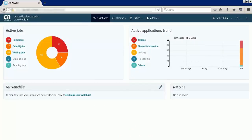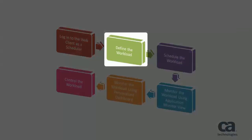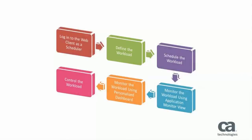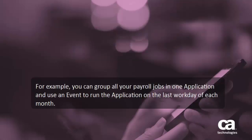The web client is logged in with the dashboard as the landing page. Next, let us see how to define the workload in the defined view. To define the workload, you must define an application and the required jobs within the application. An application is a logical container for jobs that are run by agents. For example, you can group all your payroll jobs in one application and use an event to run the application on the last workday of each month.